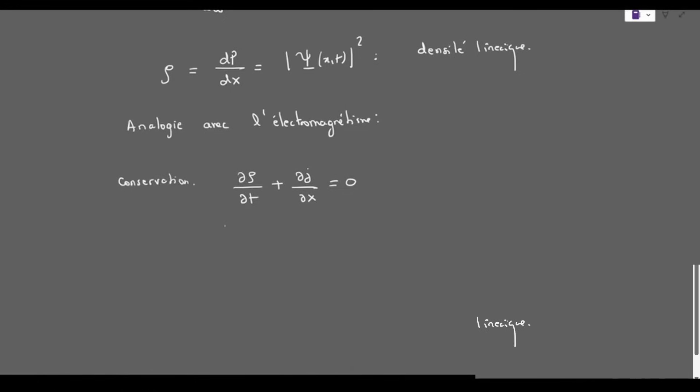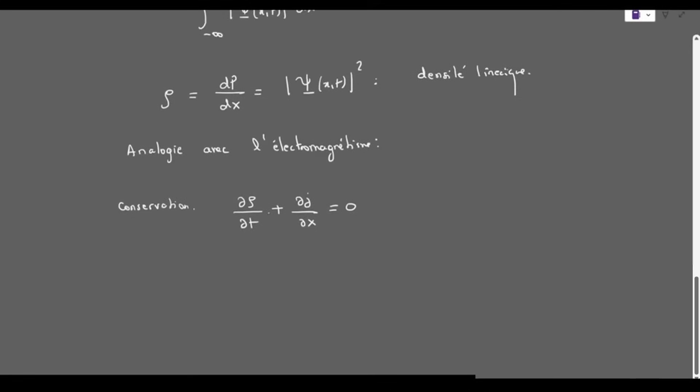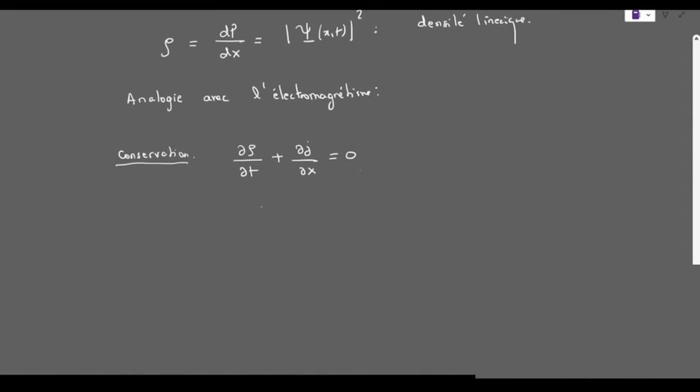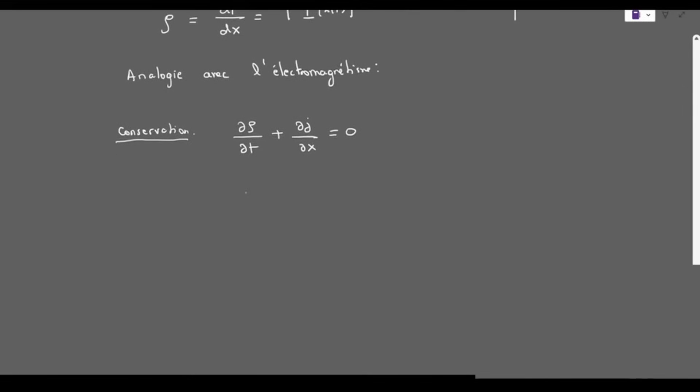j is the probability density vector, or charge density in the case of electromagnetism. We will make the analogy with electromagnetism. ρ in electromagnetism is the charge density, that is, dq over dV. And we also know that j in electromagnetism equals ρ times v.